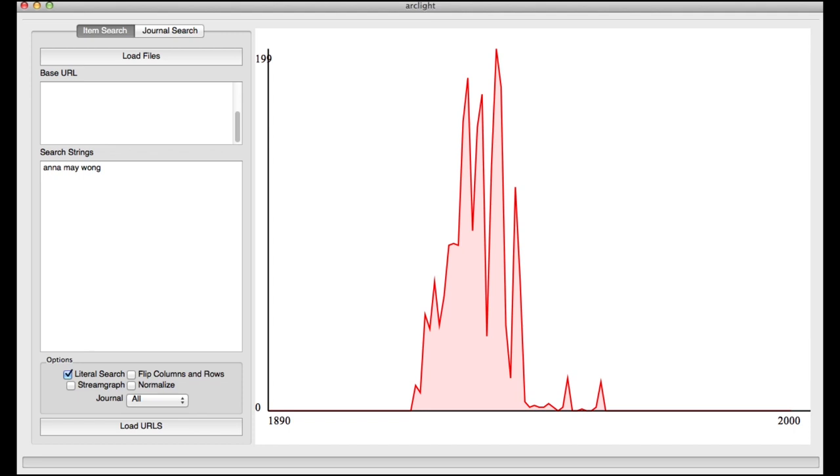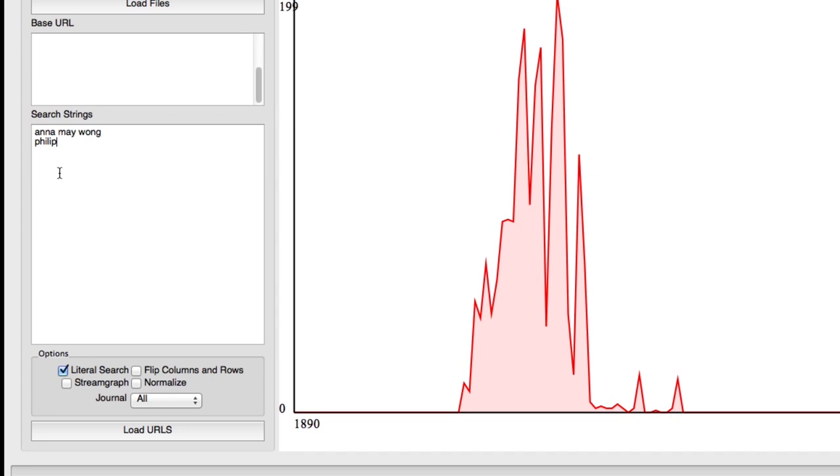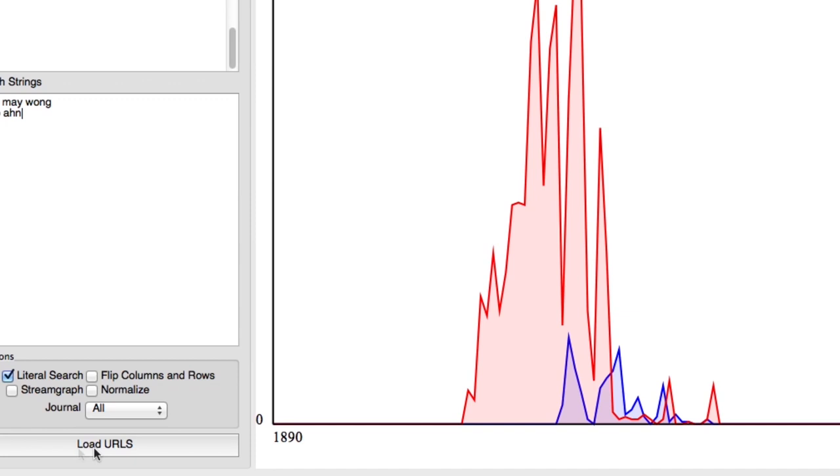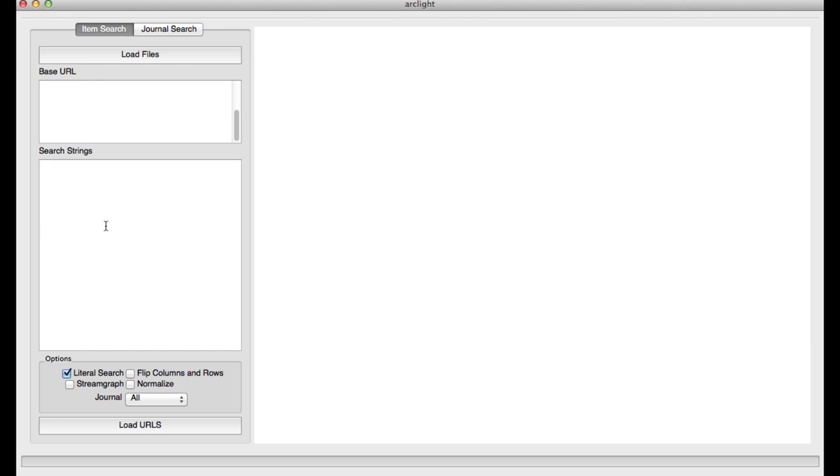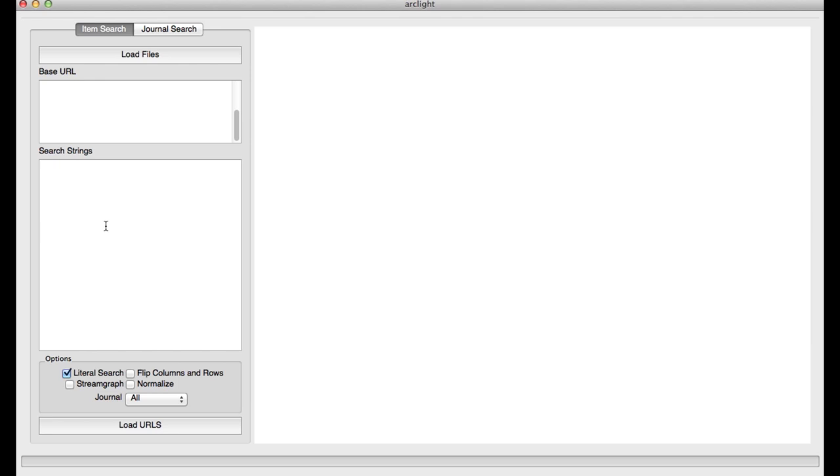Furthermore, the app has the ability to search multiple entities at the same time, allowing us to produce more comparative views of media history. For example, I want to see how another Asian American actor like Philip Ahn compares to Wong. With a simple search, I can see how their trending patterns overlapped and raise possible questions about the reasons when they do intersect and when they do not. While this example only has two entities, the Arclight app is capable of searching for thousands of entities at the same time.